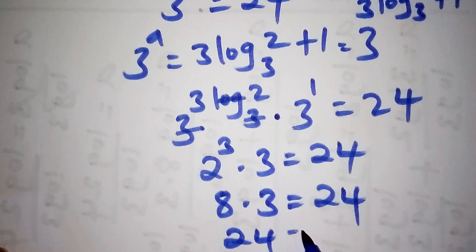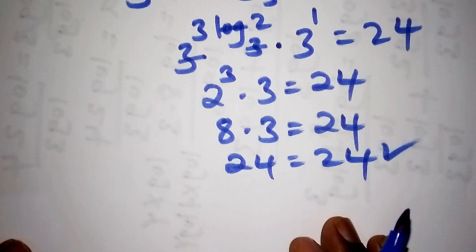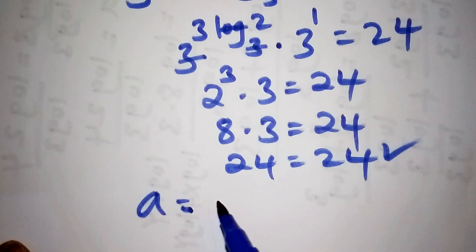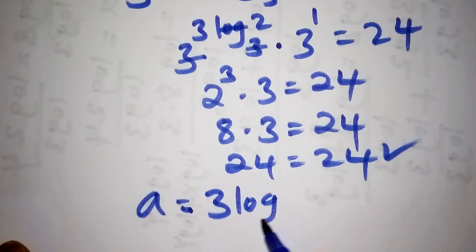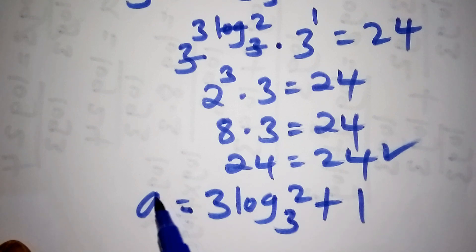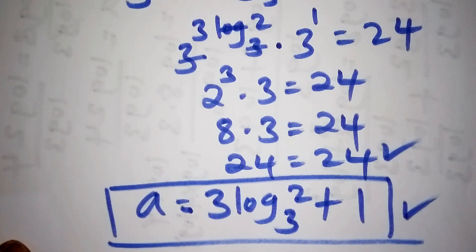So meaning that we are very correct when we concluded that the value for a in this case is equals to 3 times log of 2 to the base of 3, then plus 1. This qualifies to be our correct answer. So let's stop there and see you in our next video.